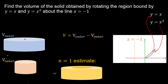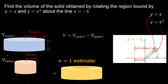For this estimate, our outer cylinder will have the maximum radius, which is 2 — that's 1 from the y-axis to x equals negative 1, plus another 1 for the maximum extent of the shape. We'll call that R outer. For our inner cylinder we use the minimum radius, which is just that distance from the y-axis to x equals negative 1, so R inner equals 1. The height of both cylinders is the same — the maximum height of our shape, which is 1.